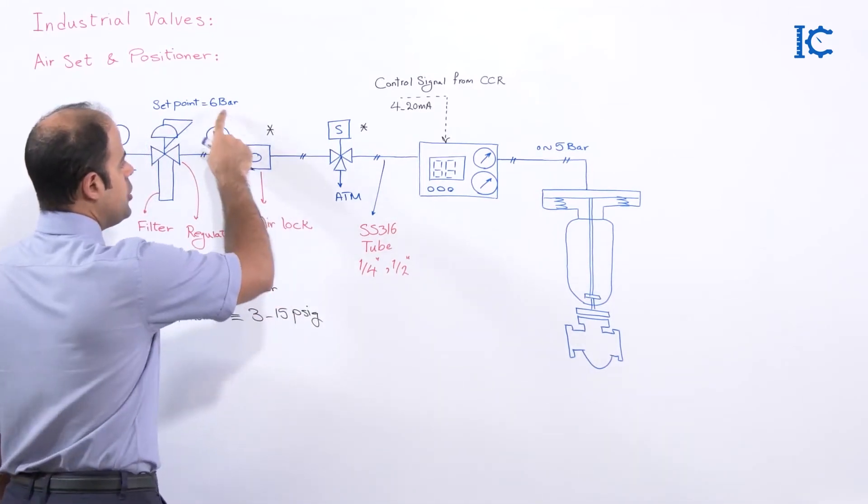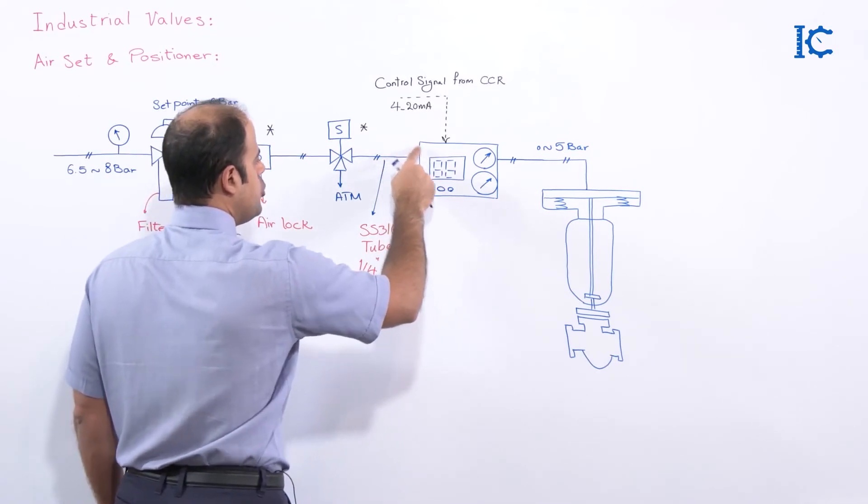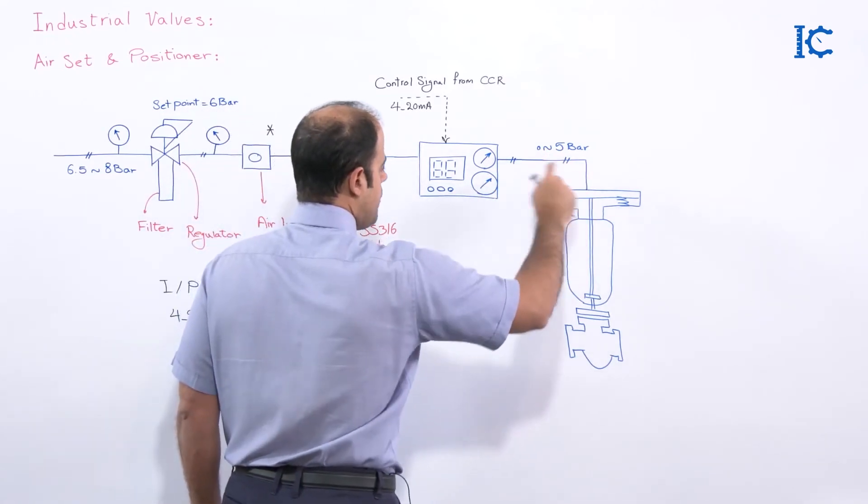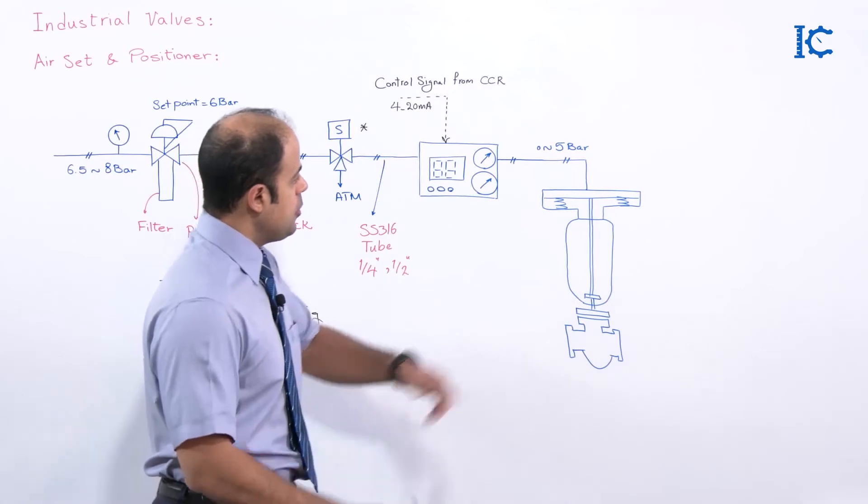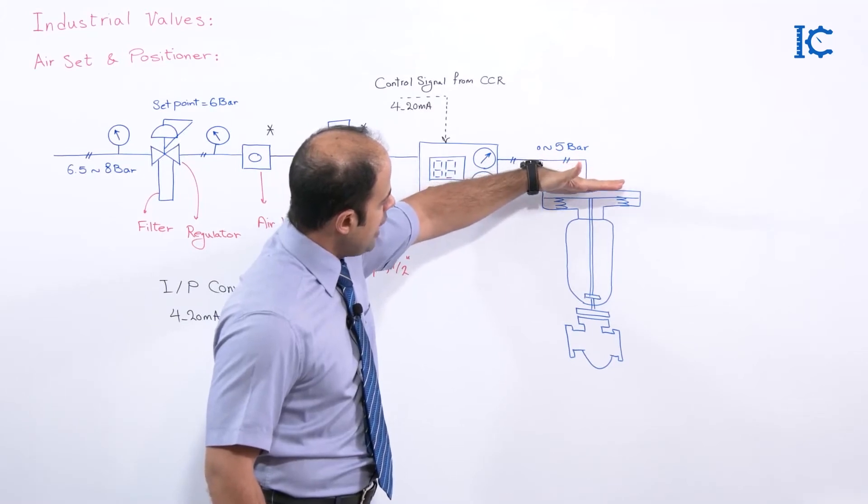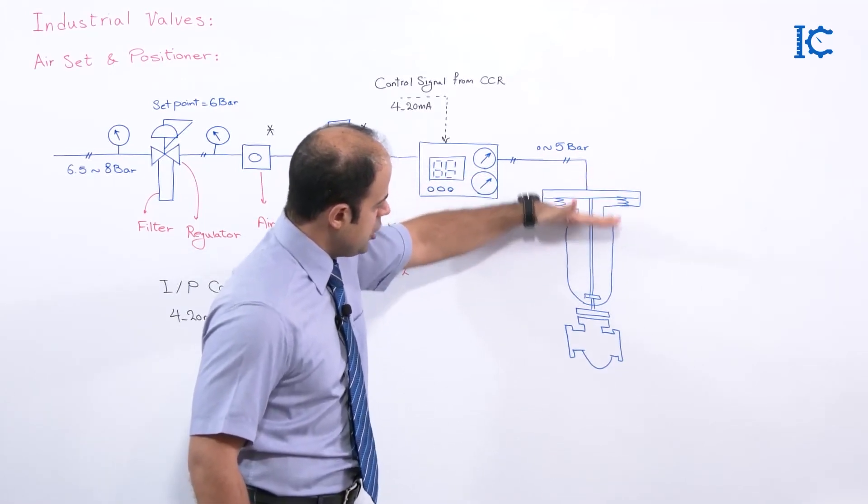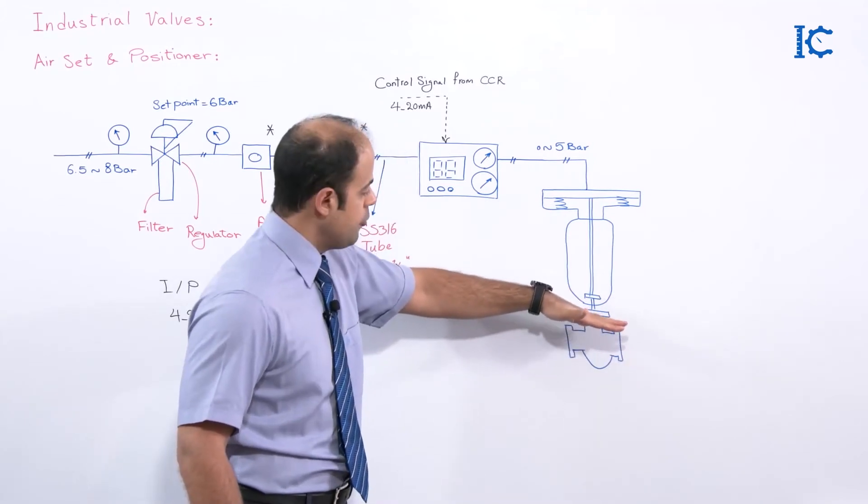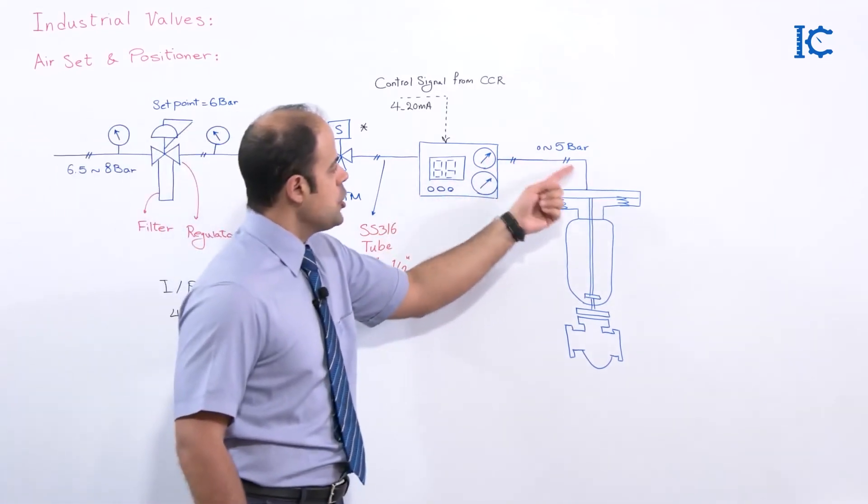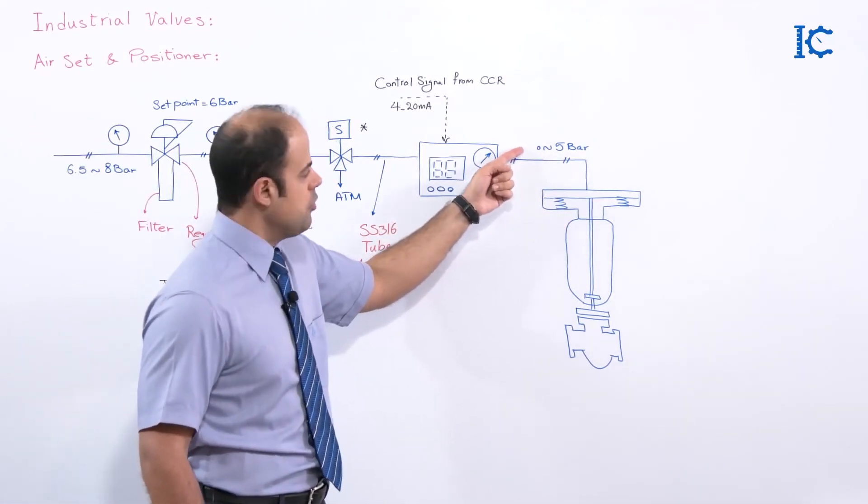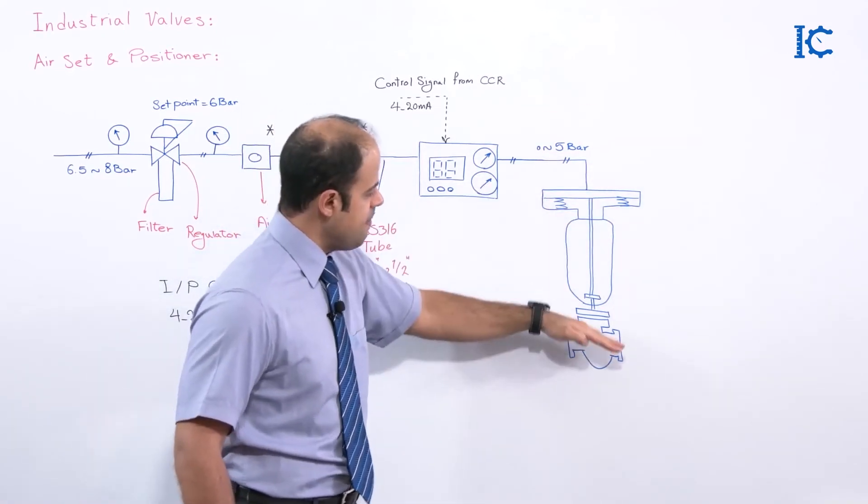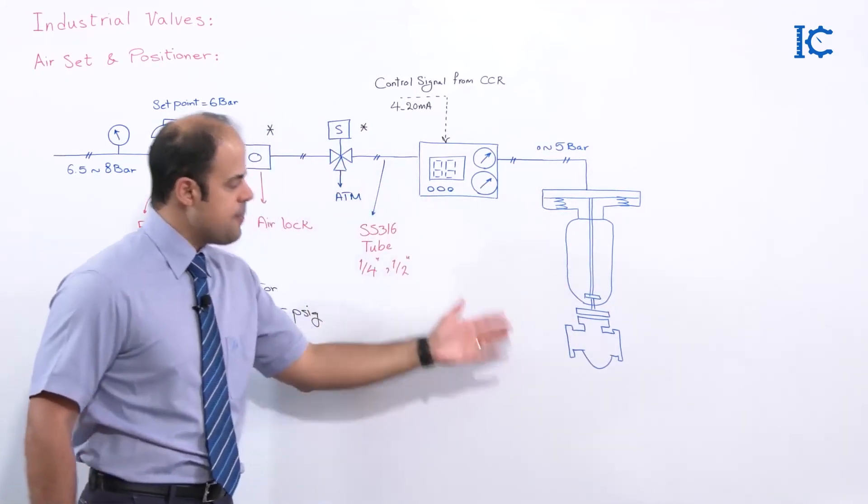So do not forget the pressure that we have inside of the positioner would be around 6 bar. I said that approximately at maximum case we have 5 bar here. So as you can see, the time that the pressure of this line is around 5 bar, it means that the valve is going to shift down and then close the valve. And for sure the pressure of this line is going to be close to 0. There is no pressure, and in this case the force of the spring causes that the valve would be opened up.